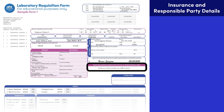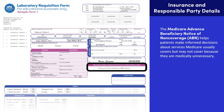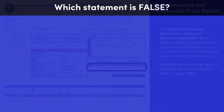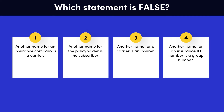The Medicare Advanced Beneficiary Notice of Non-Coverage, or ABN, helps patients make informed decisions about services Medicare usually covers but may not cover because they are medically unnecessary. When Medicare coverage denial is expected, the provider has the patient sign an ABN. By signing, the patient confirms that they receive notice that they may be required to pay for the denied services. Based on what we've covered so far, which of the following statements is false?